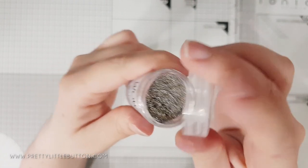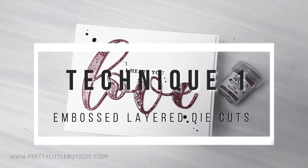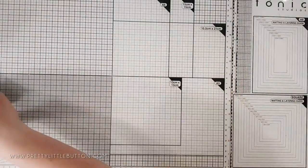For the first technique we can use the powders to emboss layered die cuts. These embossed die cuts can create real amazing focal elements to a card and the powder will just shine out.